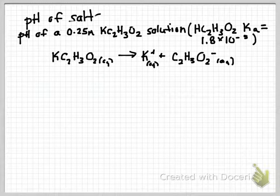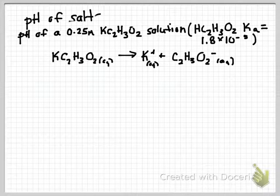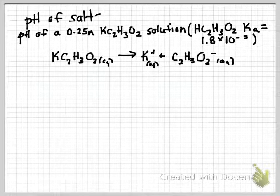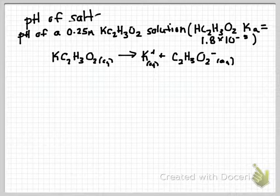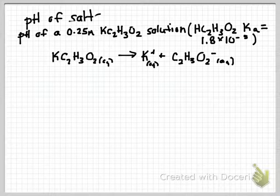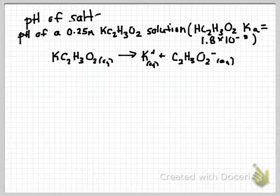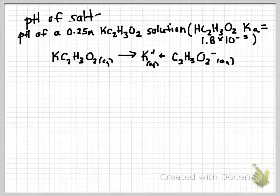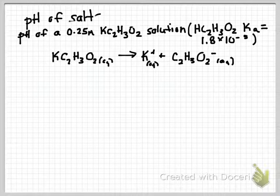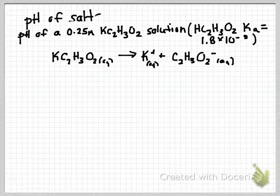In this video, we're going to do the calculation to determine the pH of a salt solution. The example I'm going to look at is solving the pH of a 0.25 molar potassium acetate solution given the Ka of acetic acid of 1.8 times 10 to the minus 5.